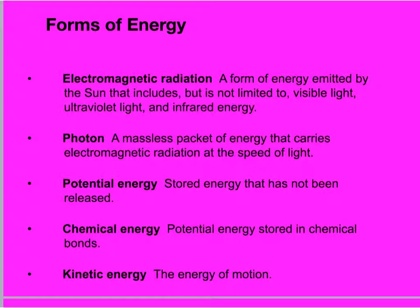Energy exists in different forms and can be converted from one form to another. Potential energy, kinetic energy, light energy, chemical energy, and sound energy are all important types in environmental systems. Most of the energy on Earth is derived from the sun, which emits electromagnetic radiation — a form of energy that includes visible light, ultraviolet light, and infrared light, which we perceive as heat. Electromagnetic radiation is carried by photons, tiny packets of energy that travel at the speed of light and can move even through a vacuum in space.